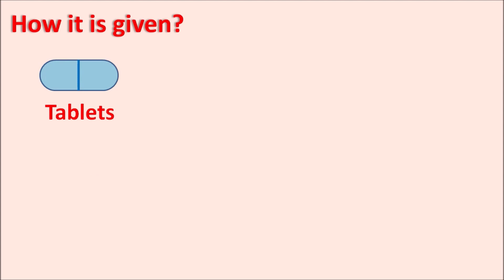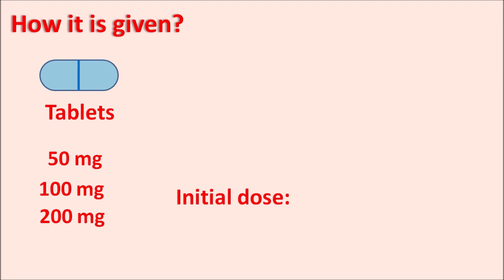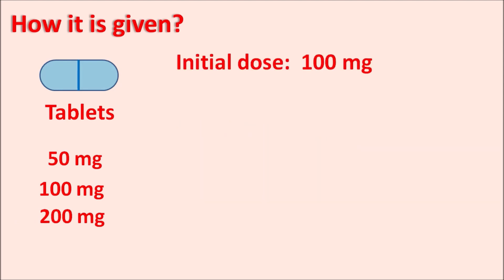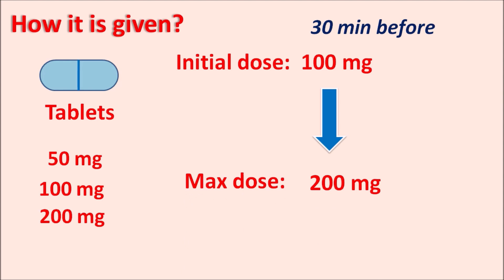How is it given? This drug is available as tablets in three strengths: 50 mg, 100 mg, and 200 mg. The initial dose is 100 mg given 30 minutes before intercourse, and the dose can be increased to a maximum of 200 mg. The initial dose can also be adjusted down to 50 mg in some patients.